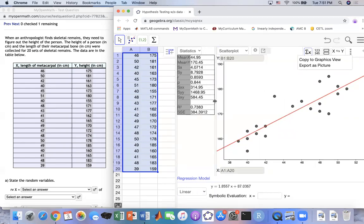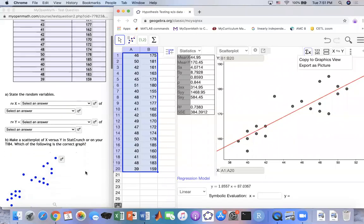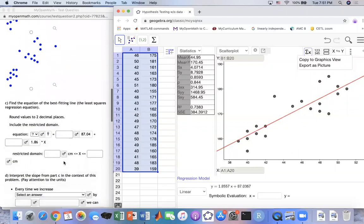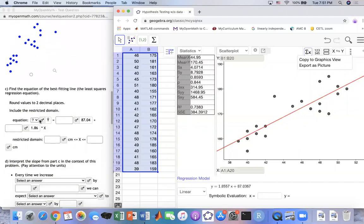Now, you want to find the equation. They have the scatter plots right here. Over here, they ask for the equation. This is like a model.